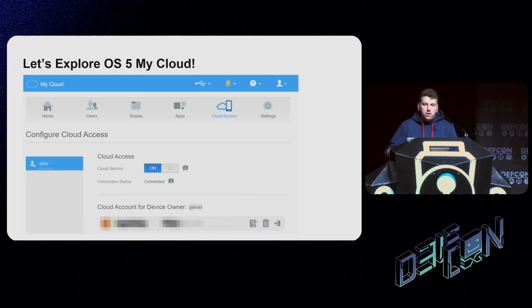This is exactly what we did at Pwn2Own — we got the reverse shell and also $40K, which was nice. But we weren't limited to just Pwn2Own or a single device. We could exploit any device whose GUID we knew, and we had thousands — maybe millions. With great power comes great responsibility, so we reported everything to Western Digital and worked with them until everything was resolved.